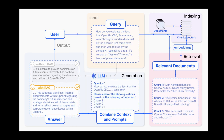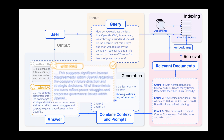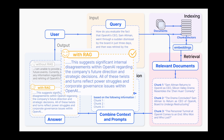Finally, with that information, the LLM returns the response: 'This suggests significant internal disagreement within OpenAI regarding the company's future direction and strategic decisions. All of these twists and turns reflect power struggles and corporate governance issues within OpenAI.' That's how you enrich an LLM with up-to-date information by retrieving and augmenting the generation process by simply adding a database.